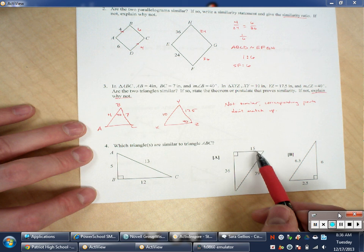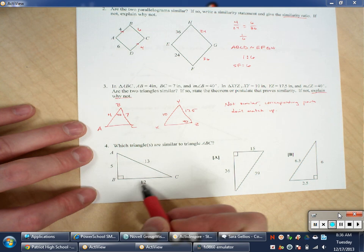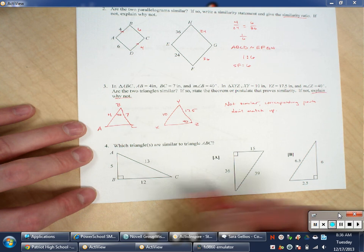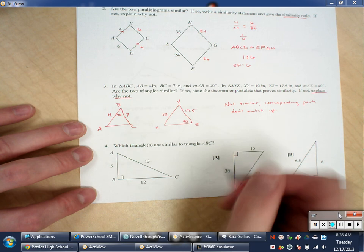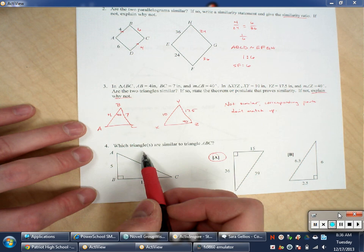So 15 is 3 times 5. So I'm going to check to see if the same ratio exists for the other two sides. So 12 times 3 is 36, 13 times 3 is 39. So those two are similar. I'm going to go ahead and check the second one also because of the way the question is worded.